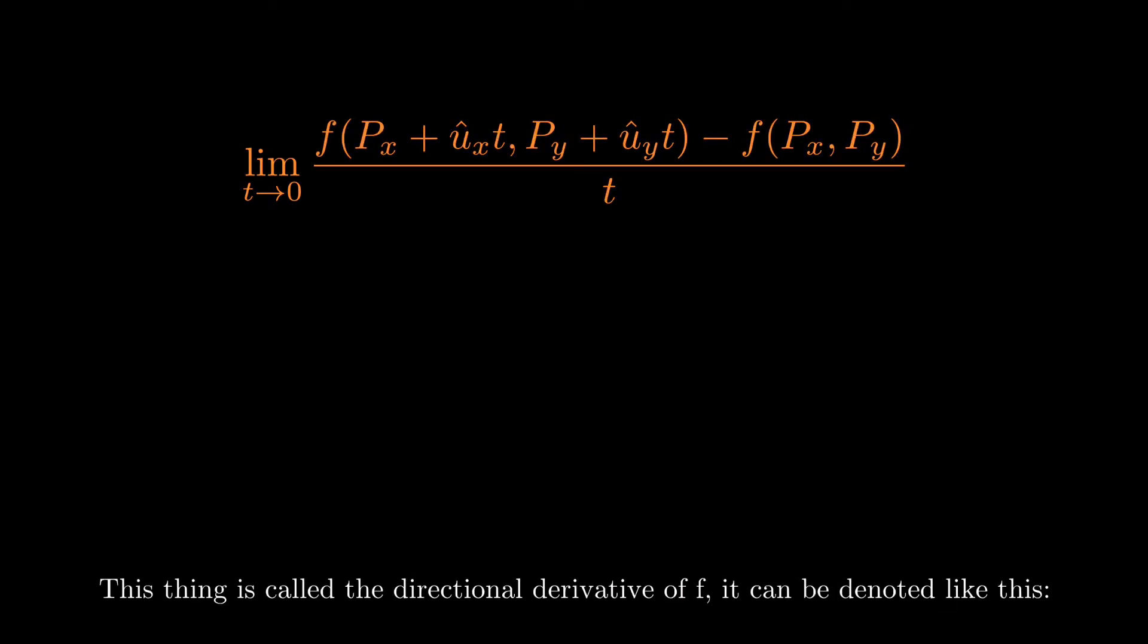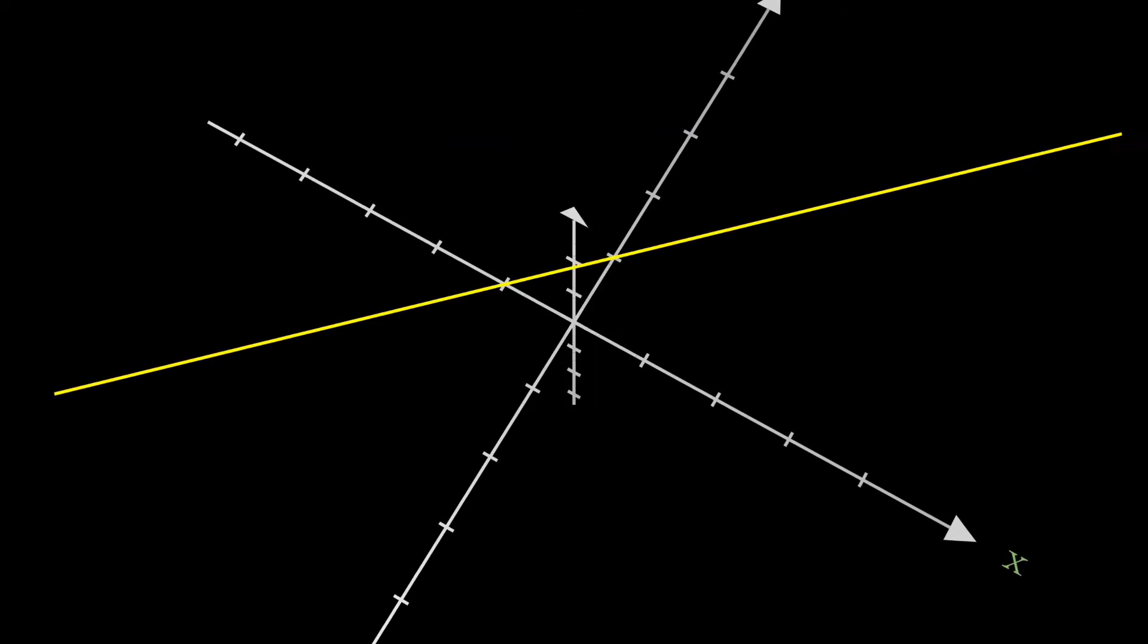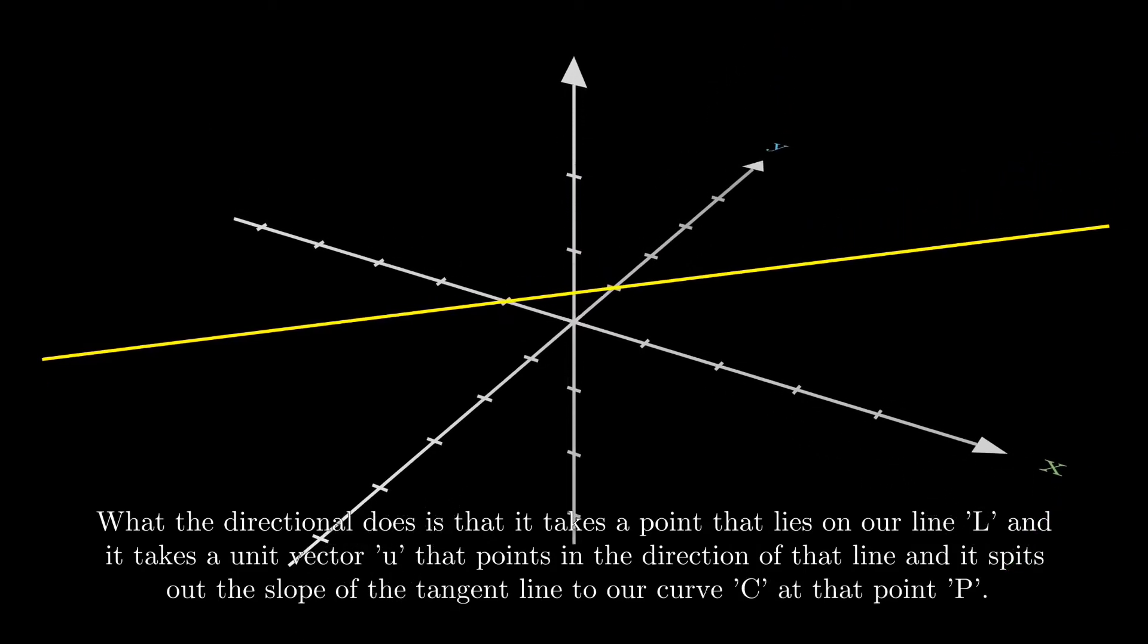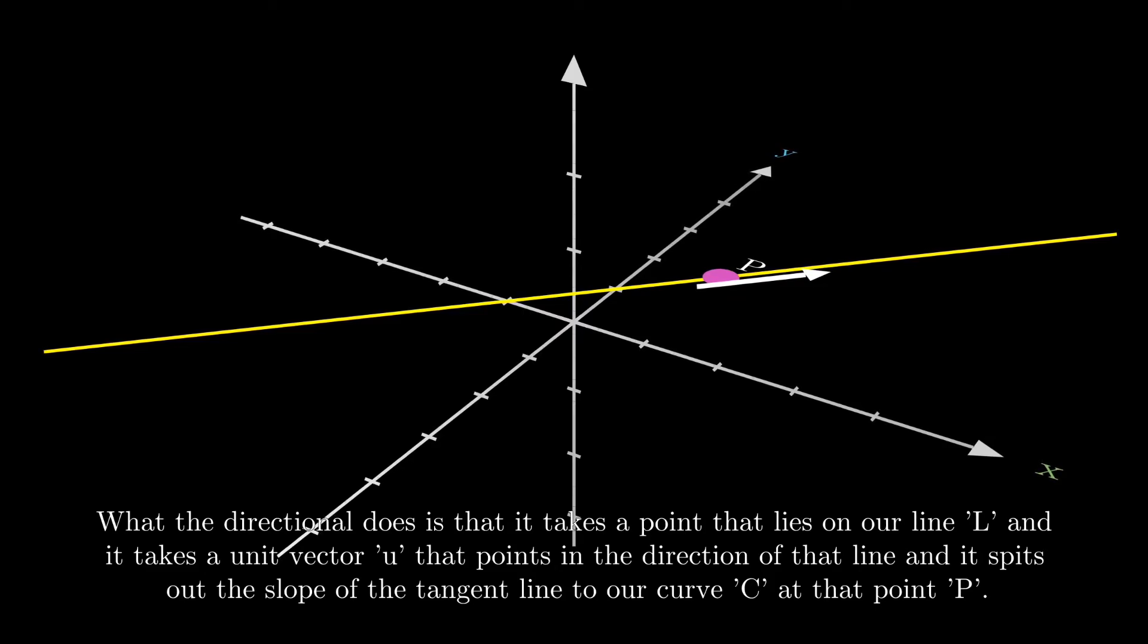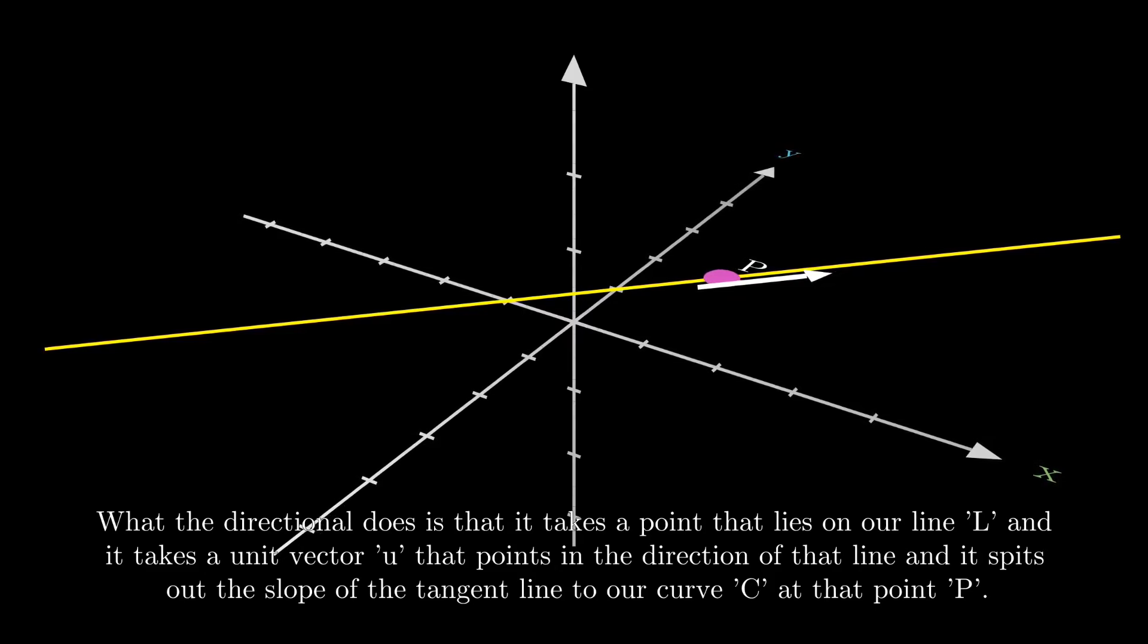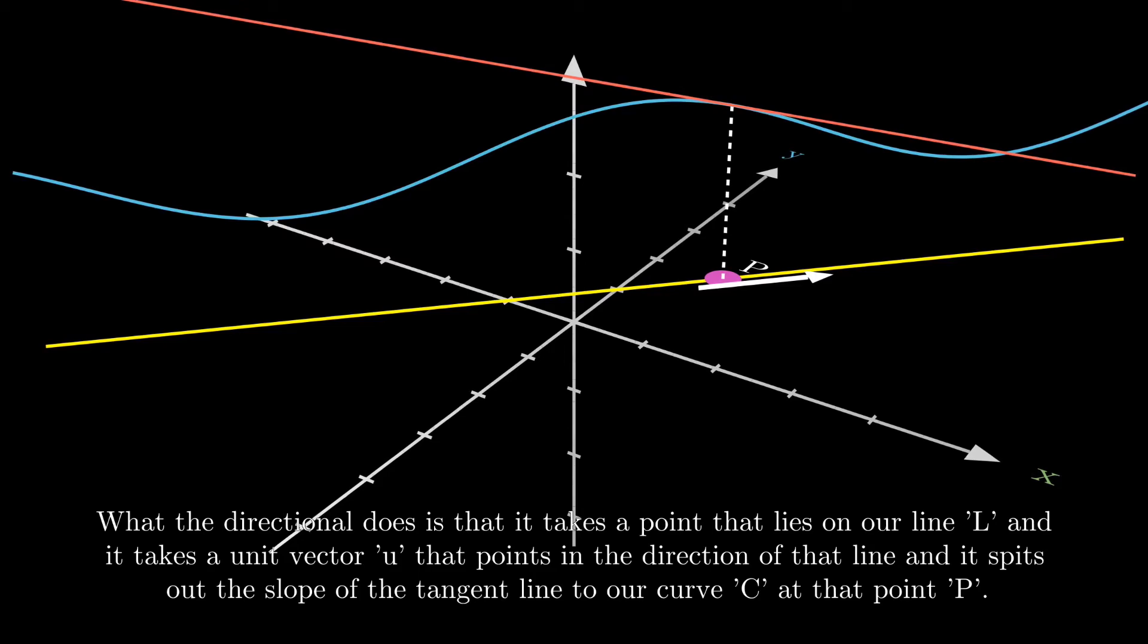This thing right here is called the directional derivative of F, and we denote them like this. What the directional derivative does is that it takes a point that lies on our line L, and then it takes a unit vector that points in the direction of that line, and it spits out the slope of the tangent line to our curve C at that point.